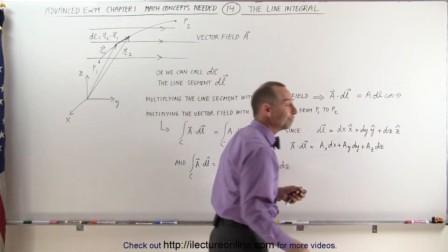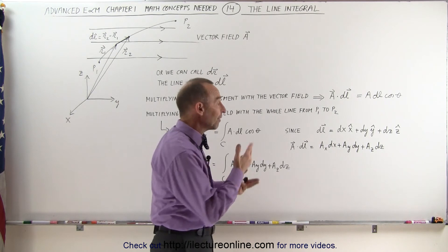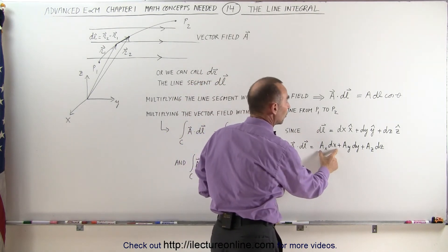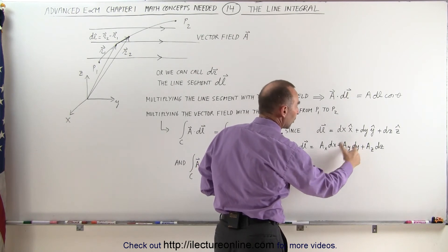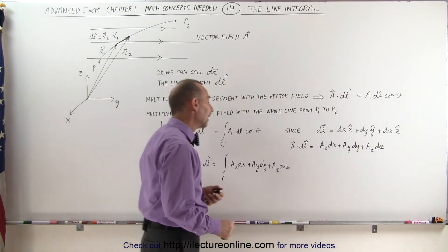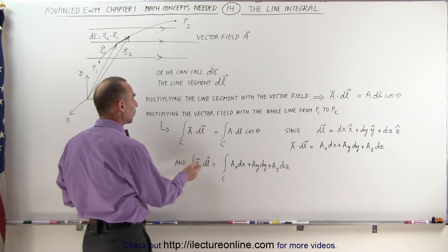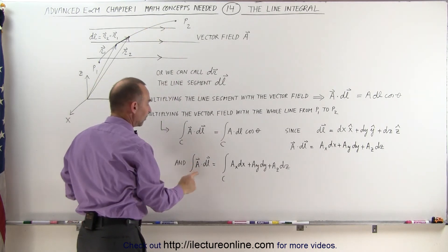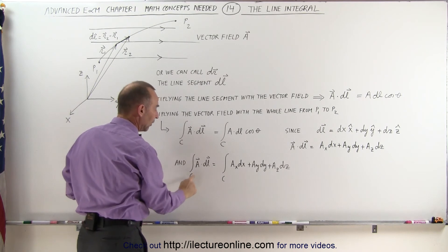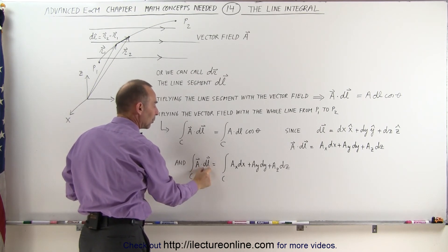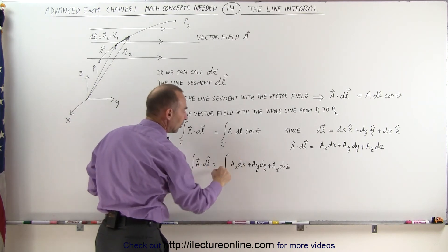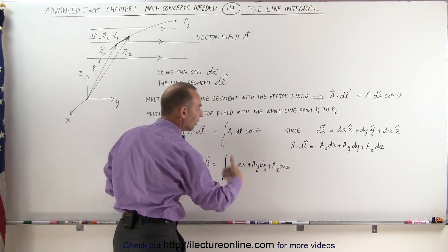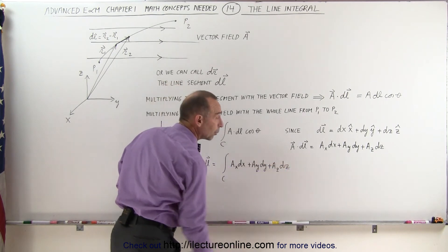Dotting the two vectors — the vector field A and dl — we end up with the x components multiplied together, plus the y components multiplied together, plus the z components multiplied together. So integrating a line segment through a vector field is simply the integral along that curve of A dotted with dl, which equals the integral of each of the three components of the vector field multiplied by each of the three components of the small line segment.